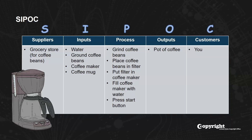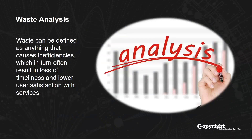After creating a SIPOC, we begin to create a graphical representation of the current state process using Business Process Modeling Notation, or BPMN. After defining the current state of a process, we start to look at options for its future state by performing waste analysis using industry tools. Waste can be defined as anything that causes inefficiencies, which in turn often result in loss of timeliness and lower user satisfaction with services. Inefficiencies can occur across multiple different areas — for example, is a particular process slower because it relies on old technology, or are materials moved from one place to another more than necessary? One such example is asset management, which involves aspects of moving physical items and using older technology to track their location.